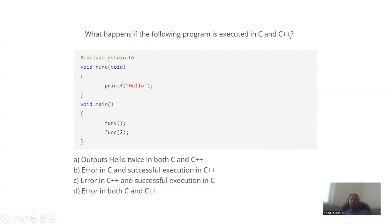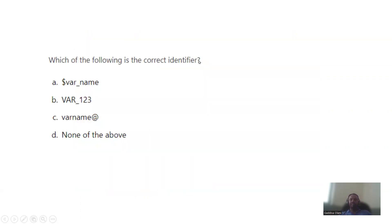If the following program is executed in C or C++, a user-defined void function is declared. If a variable is declared at 100 and a second function call is made — func two — this will generate an error. Which of the following is a correct identifier? A valid identifier must start with a letter or underscore. It can contain letters, digits, and underscores, but not punctuation marks or dollar signs.